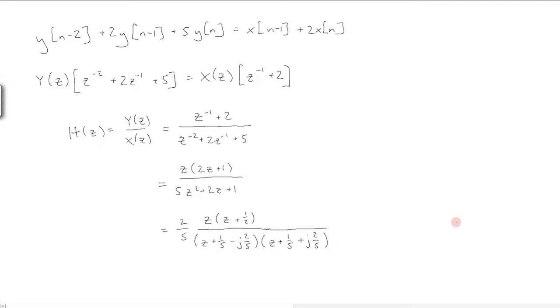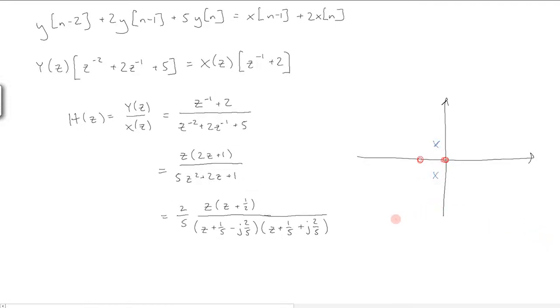We can draw this in the Z-plane, with one zero over here and another at the origin, and two complex conjugate poles something like this. This fully characterizes our Z-transform.